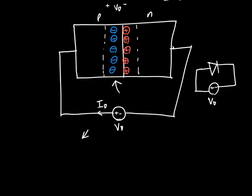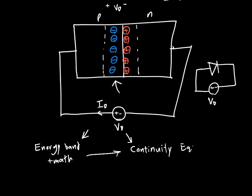To answer these questions we're going to approach it from two angles. First, to get a more intuitive, heuristic understanding of what's happening, we're going to use the energy band model or energy band diagrams. Then after we have an intuition for what's going on, we're going to sprinkle on a little bit of mathematics and move to using the continuity equation. Solving the continuity equation will allow us to figure out the carrier distribution — n and P as a function of position and time — and these will collectively allow us to find the current flowing through the diode.